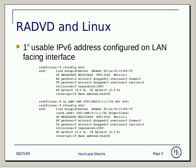Here we have output showing a basically empty configuration on eth1. We then apply that first usable IPv6 address to the interface, and then we show what the interface looks like with that address configured.